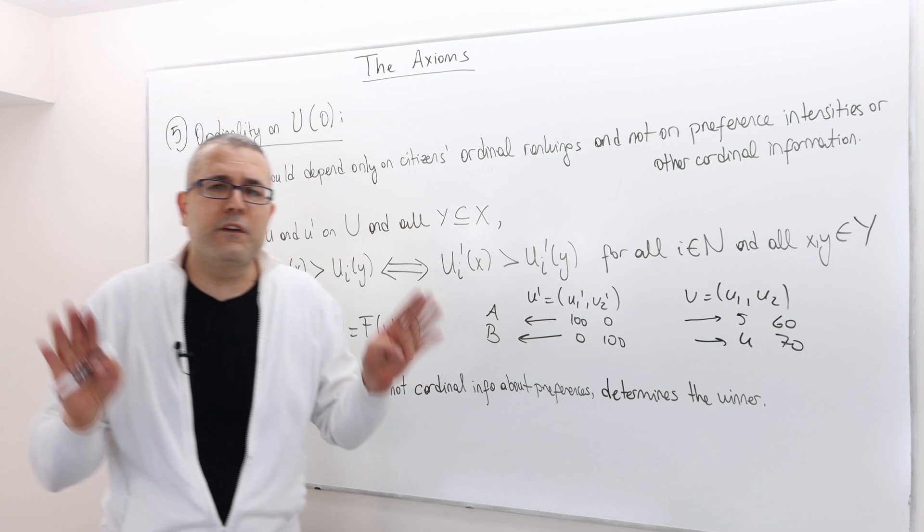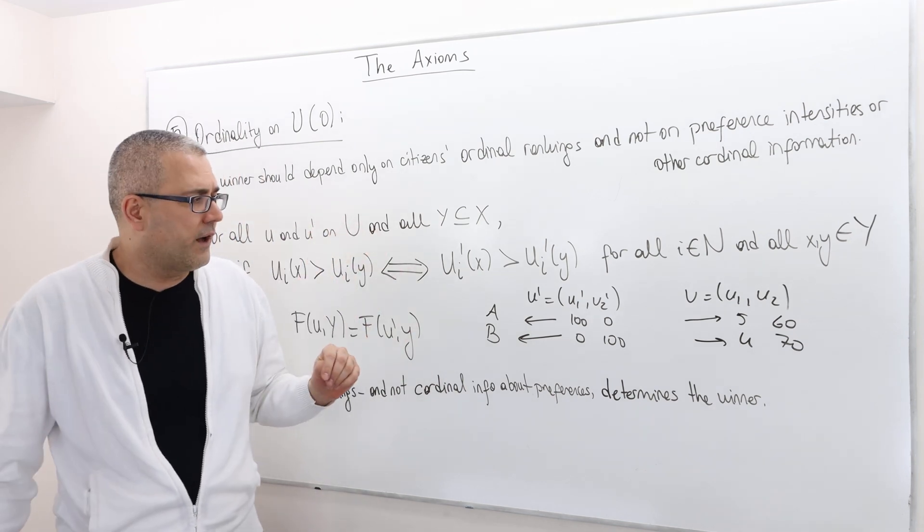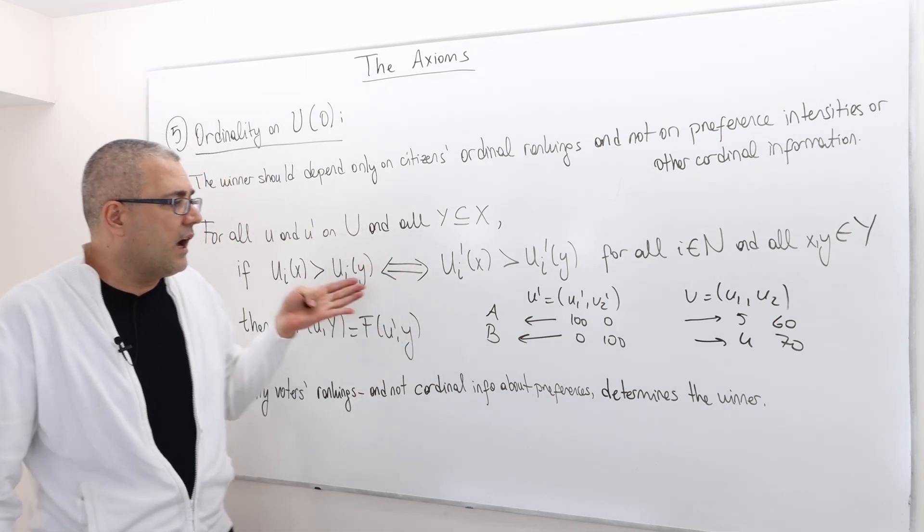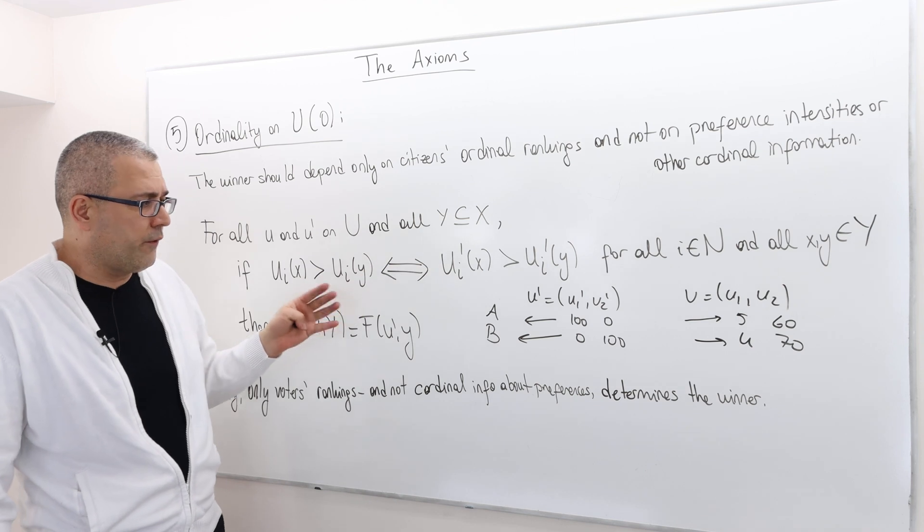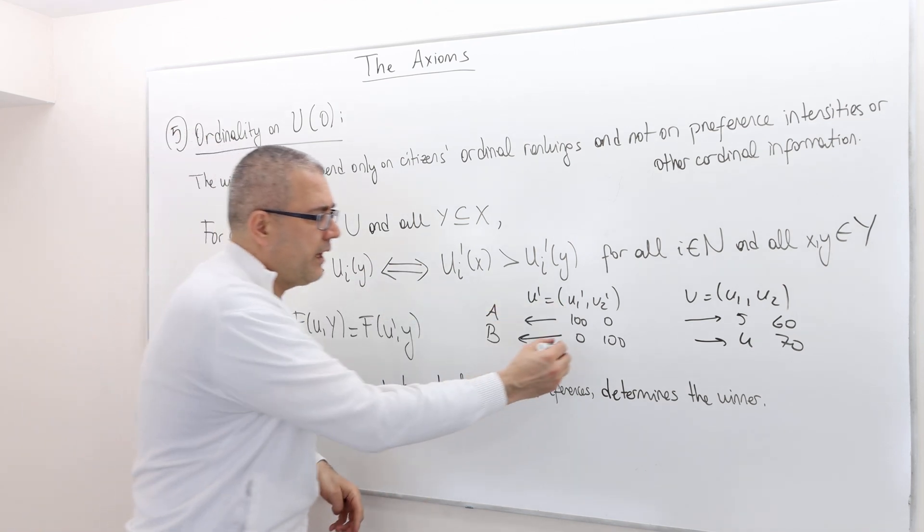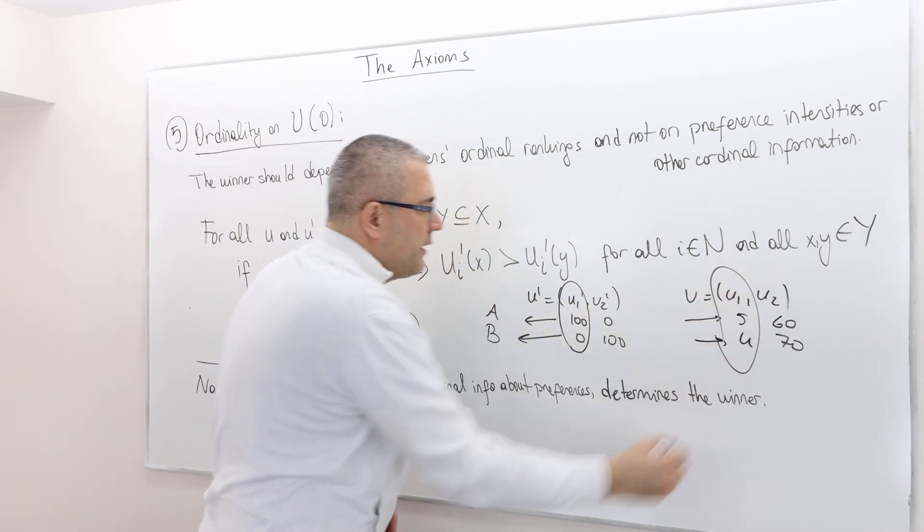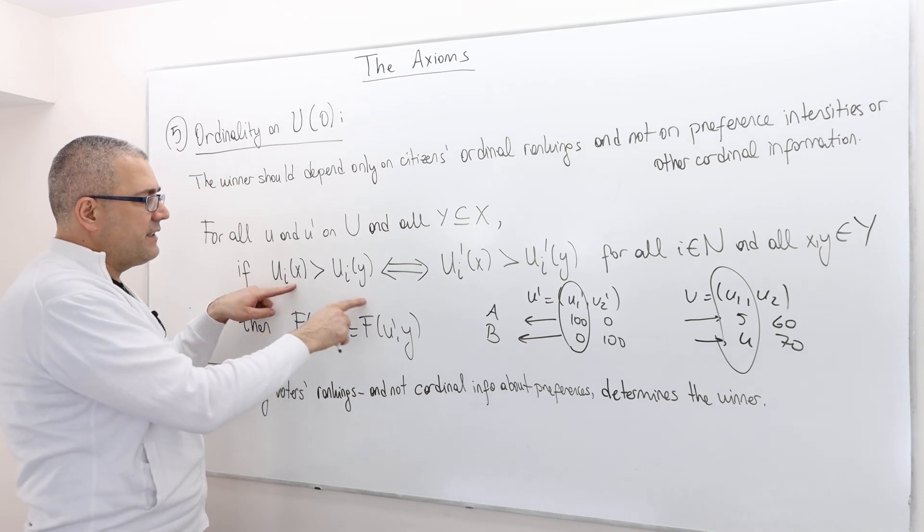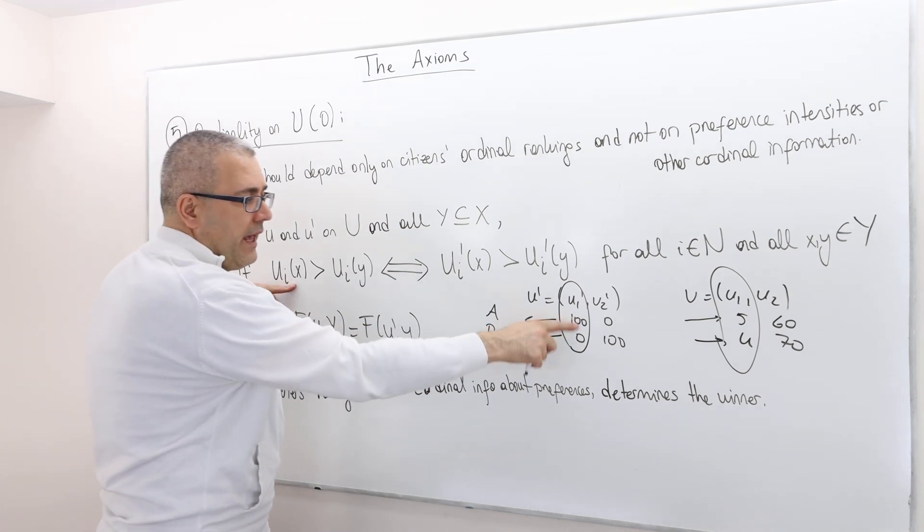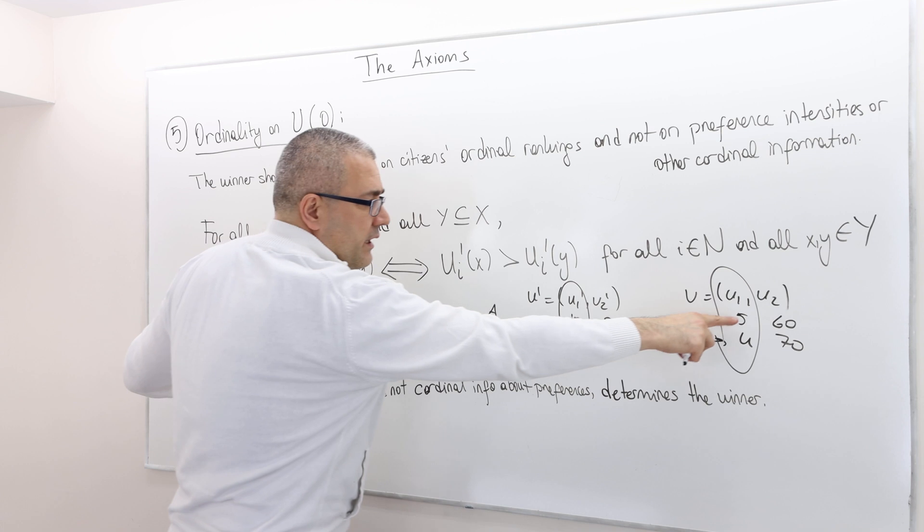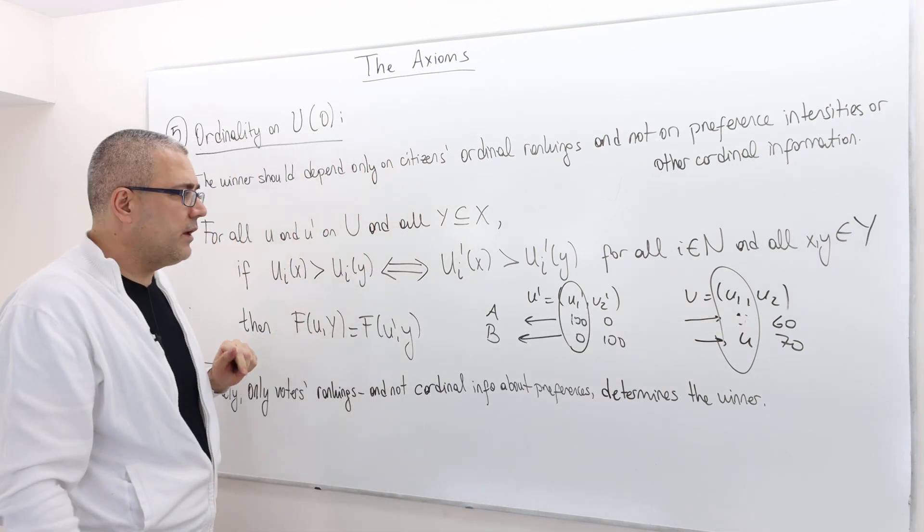Both of those preference profiles for each individual, I mean, look at individual one. Here, X is better than Y, A is better than B, while here A is also better than B. Well, what about individual two? Well, for individual two, B is better than A, but you know what? B is also still better than A.